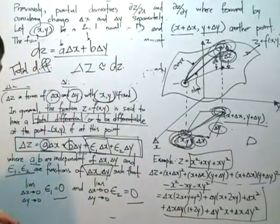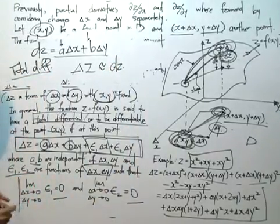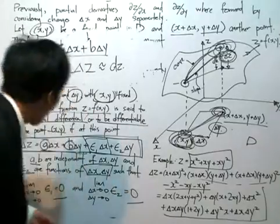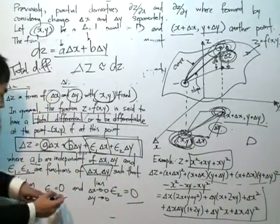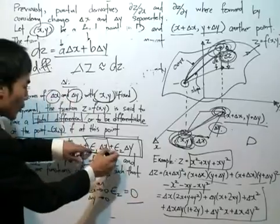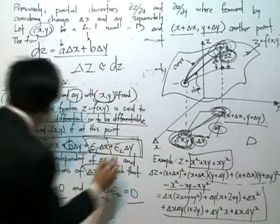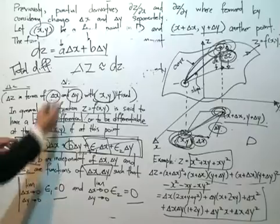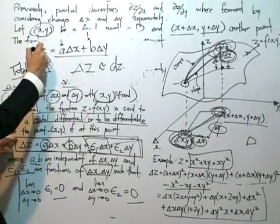It comes from these conditions over here. You see, if I were to make x and y sufficiently small, x and y actually tends towards 0. And if I were to just substitute 0 inside this epsilon 1, epsilon 2, they actually cancel out, and I know that the delta z is given by the total differential of dz.